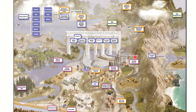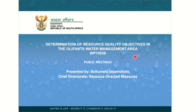We also spoke about strategies: the reserve, ecological reserve, basic human needs, allocation systems, strategic use, inter-catchment transfers, and international obligations — all parts of the Act that must be considered. Part of the guidelines shows a puzzle of how to bring these things together to achieve the vision of sustainability, equitability, and efficient use of resources.